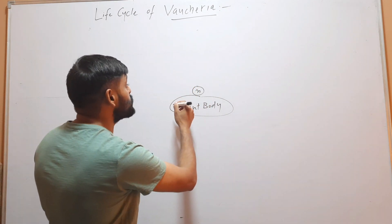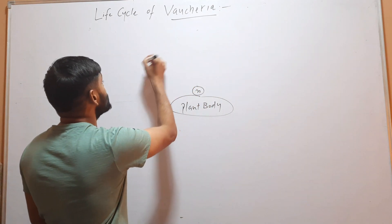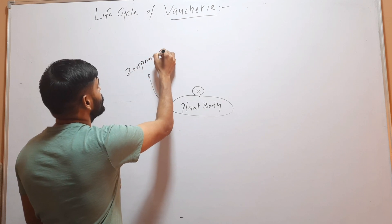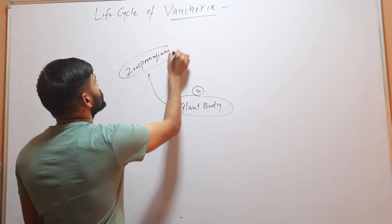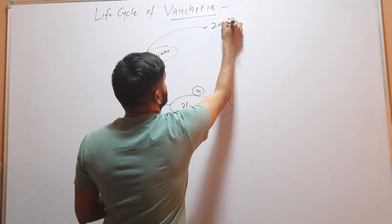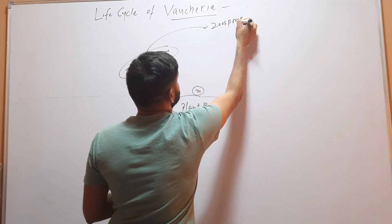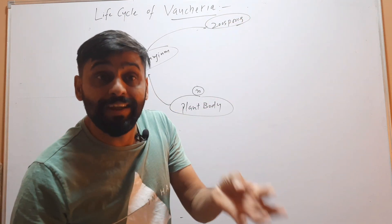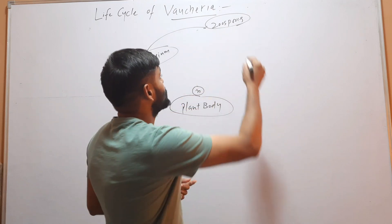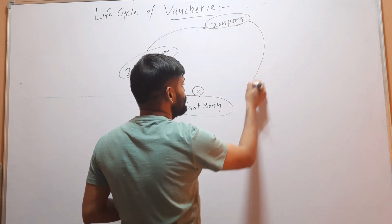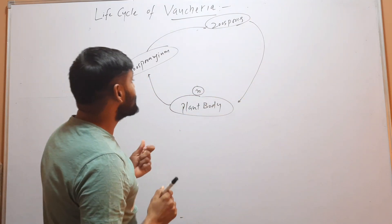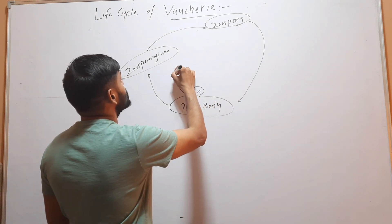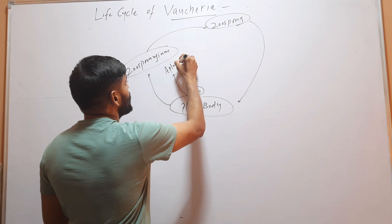The first type is through zoospores. Zoospores are formed inside zoosporangia. These zoosporangia form zoospores, and we know that these zoospores are multi-nucleated and multi-flagellated — they are called synzoospores. These synzoospores will germinate and form the plant body.